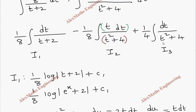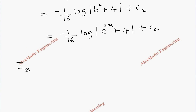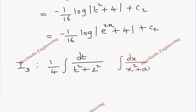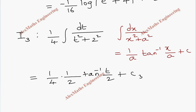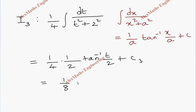For I3, we rewrite t squared plus 4 as t squared plus 2 squared. So I3 equals (1/4) integral dt over (t squared plus 2 squared). Using the formula: integral dx over (x squared plus a squared) equals (1/a) tan inverse (x/a) plus C, with a equals 2, we get I3 equals (1/4) times (1/2) tan inverse (t/2), which simplifies to (1/8) tan inverse (e power x over 2) plus C3.